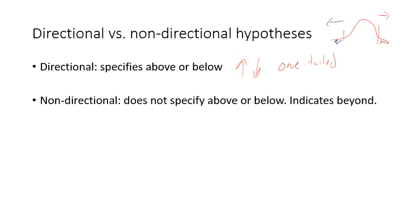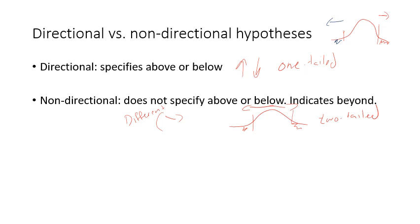You also have non-directional testing. Non-directional doesn't specify above or below — it's just different. One way to say it is that it differs from. My earlier example of the average age of Detroit Mercy students being younger was directional because it specified below. Whereas in non-directional testing it can be in either tail, so it's also called two-tailed because we're looking at both tails.